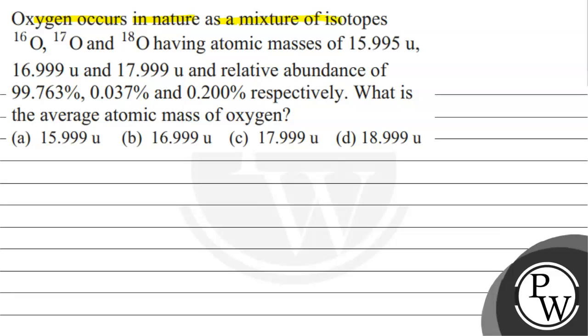The question says, Oxygen occurs in nature as mixture of isotopes O16, O17 and O18 having atomic masses of 15.995U, 16.999U and 17.999U and relative abundance of 99.763%, 0.037% and 0.200% respectively. What is the average atomic mass of oxygen?